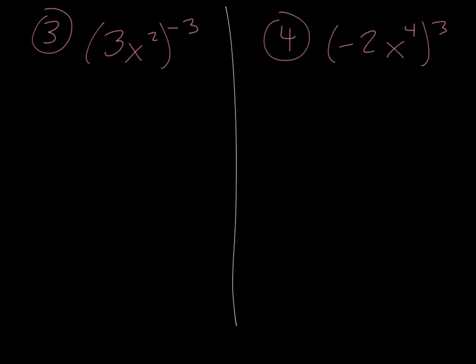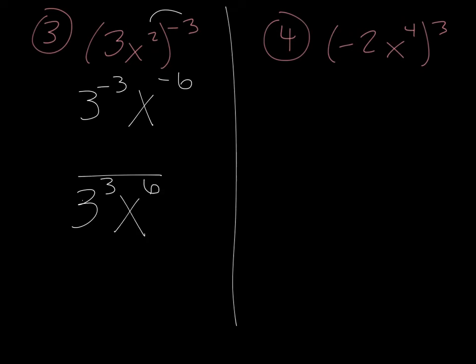Number 3: we have the quantity 3x squared to the negative 3. The first thing we want to do is distribute that negative 3 as the exponent. So we get 3 to the negative 3 and x to the negative 6 — multiplying 2 times negative 3. Anything with a negative exponent has to move, so we make this a fraction. That 3 goes to the bottom as 3 to the positive 3, and the x goes to the bottom as x to the positive 6. Since there's nothing left on top, we put a 1 there.